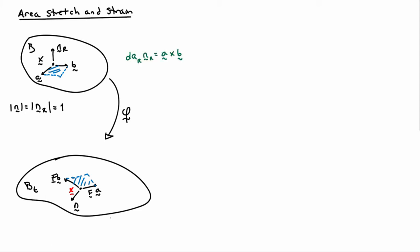We'd like to calculate the ratio of these two areas to each other. The reference area whose magnitude is dar can be written as dar nr equals a cross b. If I take the norm of both sides of this expression, then I find that dar equals the magnitude of a cross b. But this is a helpful way to write it, as we'll see in a few minutes.